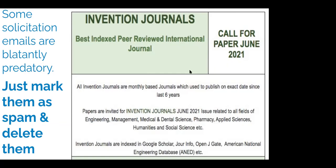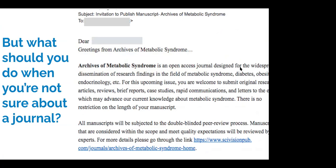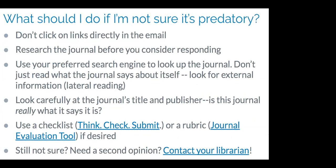Journals can say anything about themselves on the internet. Clearly that is not the best indexed peer-reviewed international journal in any subject area. Unfortunately, it's not always that easy. What should you do when you're not sure about a journal? Sometimes you might receive a solicitation that's very detailed and sounds like it could be real. First, I would recommend against clicking on links directly in the email — you don't know where they're going to send you. Don't respond until you have done your research. Look up the journal first before you think about responding.